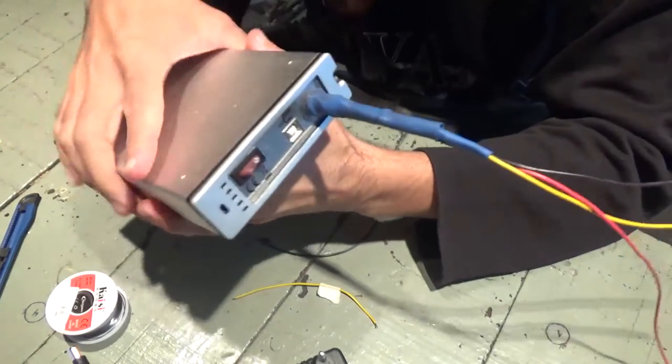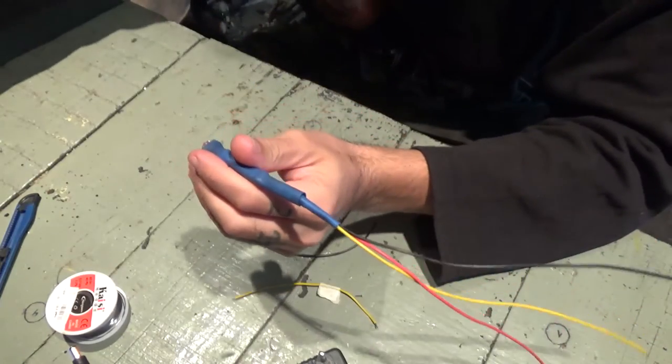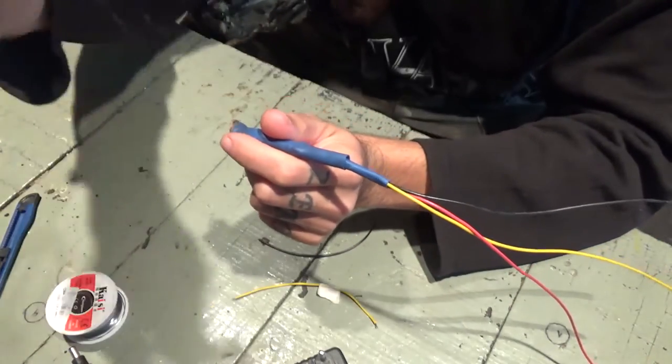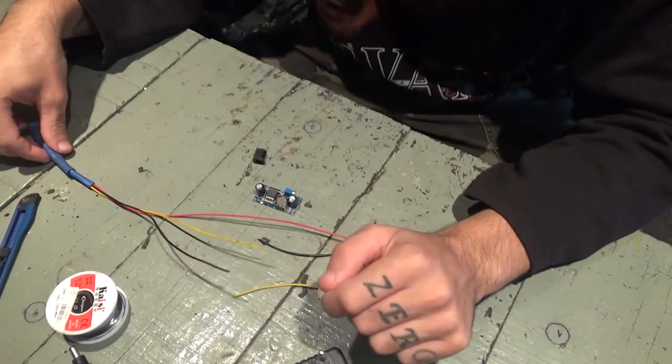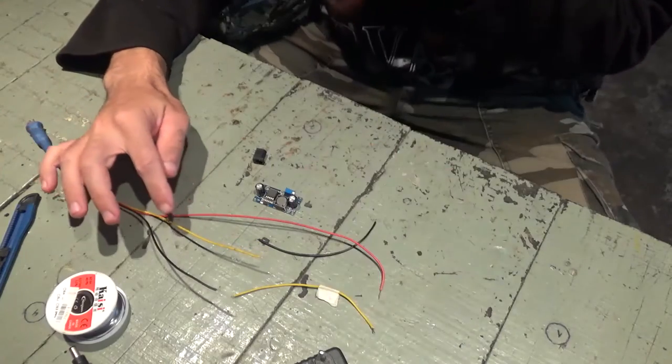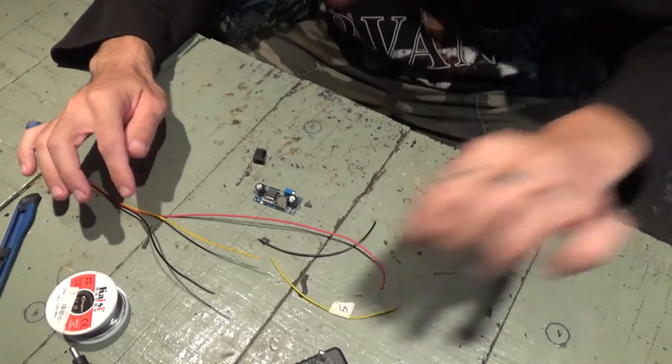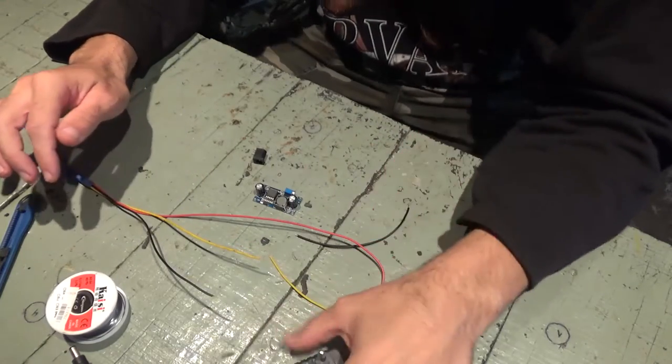And what I'll do now is - oh yeah, this is coming off, but it doesn't matter. What I'll do now is, these wires: I got the black one which is ground, yellow which is supposed to be 5 volts, and red which is 12.